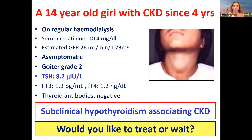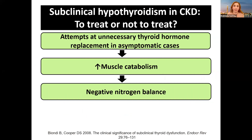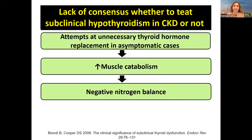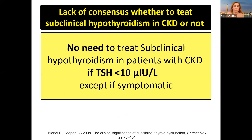The decision of treating subclinical hypothyroidism in chronic kidney disease is still controversial. Be aware that the state of subclinical hypothyroidism in such children is part of the compensatory mechanism — so sometimes it's better to leave it. Attempts at unnecessary thyroid hormone replacement in asymptomatic cases increases muscle catabolism and negative nitrogen balance will occur.